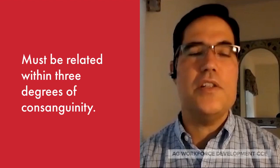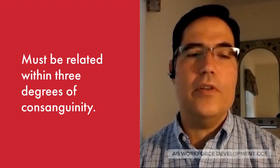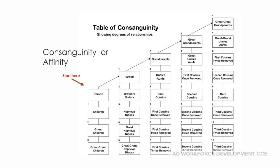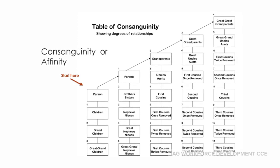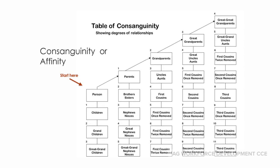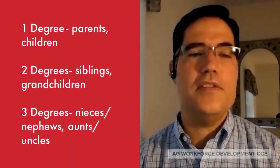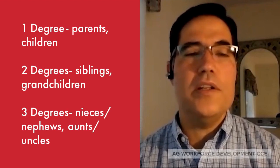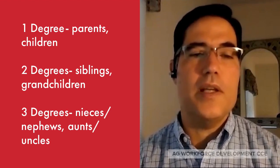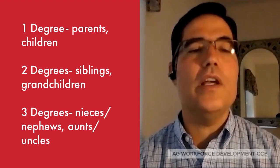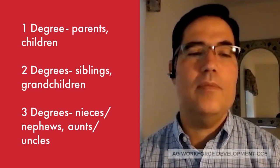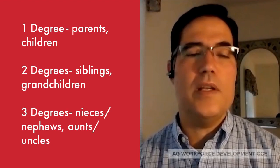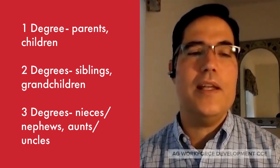The degree of relationship by consanguinity or affinity is confusing for a lot of folks, but we put this chart together to help people understand. You can see where to start — that's you and your relationships if you're the farm owner. Your parents are one degree separated from you, your children are one degree separated from you, but your brothers and sisters are two degrees because you're related to them through your parents. Their children — your nieces and nephews — are separated from you by three degrees because there are two other people between you and them.